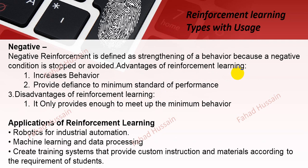After that, we have negative reinforcement learning. Negative reinforcement learning is defined as strengthening a behaviour because a negative condition is stopped or avoided — the negative condition stops or changes the agent's state to avoid it. The advantage of negative reinforcement learning is that it increases behaviour and provides a defense to a minimum standard of performance. The disadvantage is that it only provides enough to meet the minimum behaviour requirement.